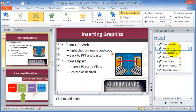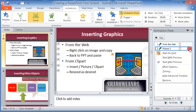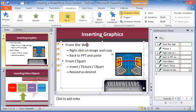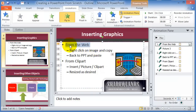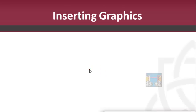If you want the image to appear at the same time as another item, click the image's dropdown in the Animation Pane and choose Start With Previous. Then when presenting, both items will show up at the same time.